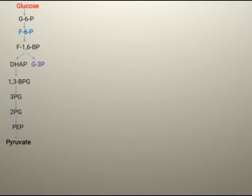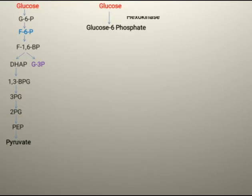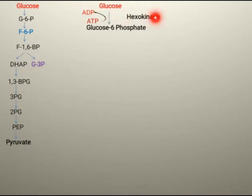Sometimes in prokaryotic cells, glycolysis can be followed by an alternative path known as the pentose phosphate pathway. In this pathway, glucose converts into glucose 6-phosphate with the help of the enzyme hexokinase, which adds a phosphate group from ATP to carbon number 6 of glucose, converting ATP to ADP.